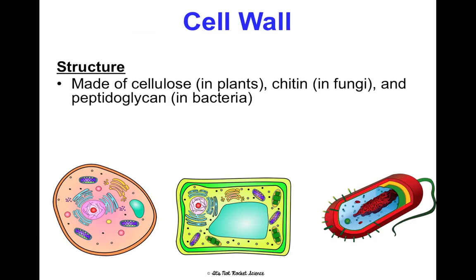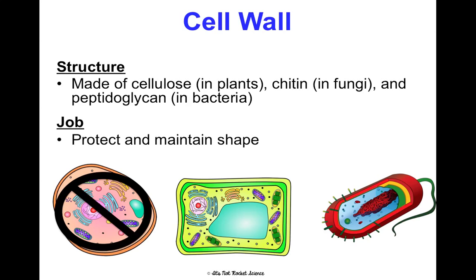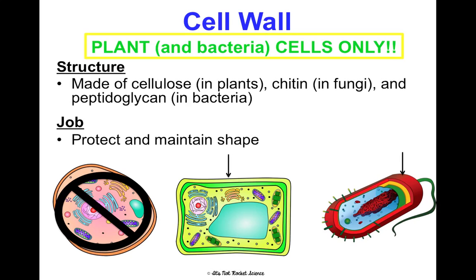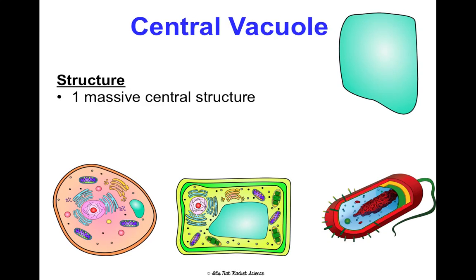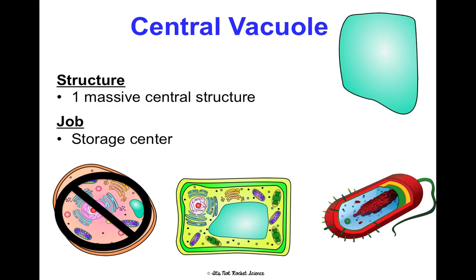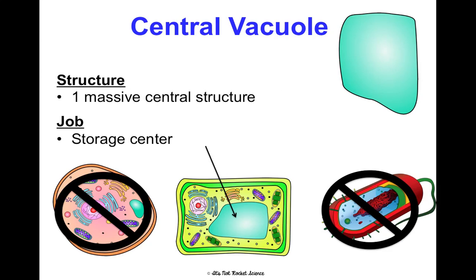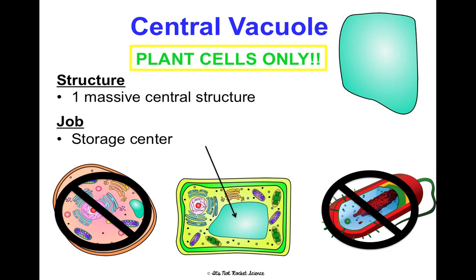The cell wall can be made of different things: cellulose in plants, chitin in fungi, and peptidoglycan in bacteria. Its job is to provide structure, maintain shape, and provide protection. It's not in animal cells, but it is the outer layer in plant cells and bacteria cells. The central vacuole is one massive central storage structure found only in plant cells — not in animal cells or bacteria cells.